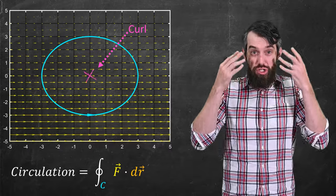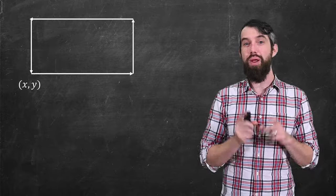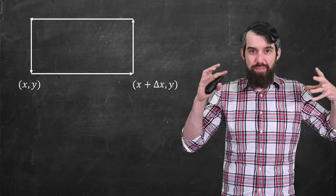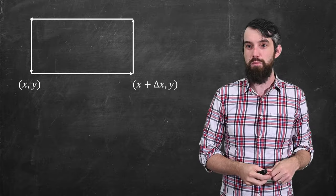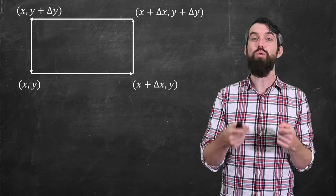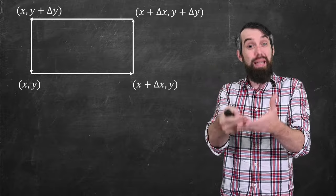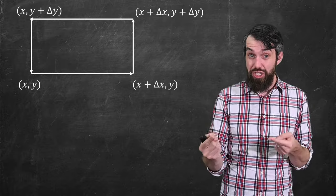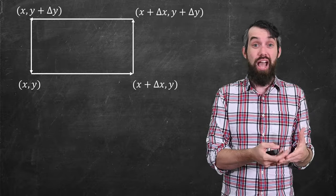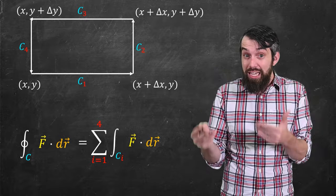To develop this local concept, imagine zooming in very far and considering a tiny rectangular path. It starts at some point (x, y), then shifts to (x + Δx, y), moves up to (x + Δx, y + Δy), back to (x, y + Δy), and returns to (x, y). I can label these four sides c1, c2, c3, and c4, and I'll imagine sending Δx and Δy to zero in a limit.